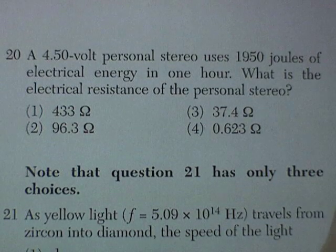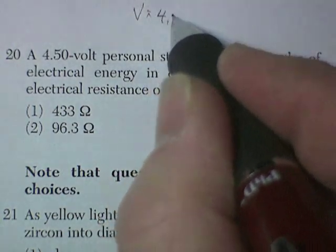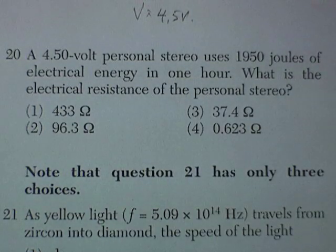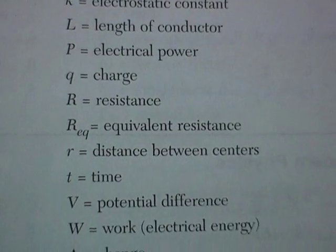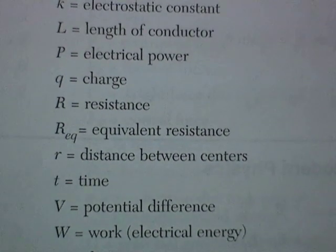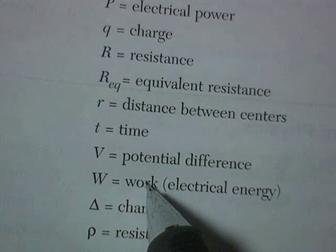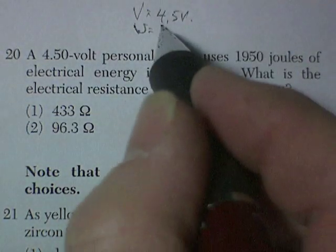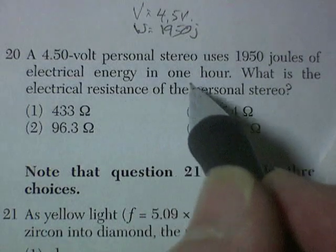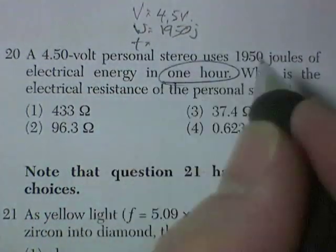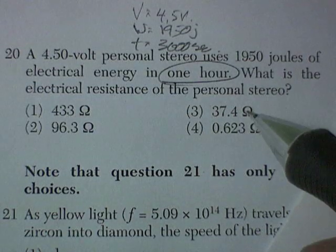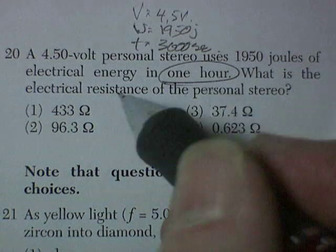Question 20, there is a 4.5 volt personal stereo. So the voltage is 4.5 volts. It uses 1950 joules of electrical energy. I can't remember electrical energy, so I go look up on my formula sheet on the right-hand side until I find electrical power. Oh, look, here it is. The work it does is defined as electrical energy, so I'm looking for W. And so I'm going to go find some formulas with W in it, and there they are. So I'm looking for W. Now I'm given W, it's 1950. And hour, so I'm given time, and ready, I'm going to call that 3,600 seconds right off the bat. Because I'm going to be dealing with seconds, 60 minutes times 60 seconds is 3,600 seconds.